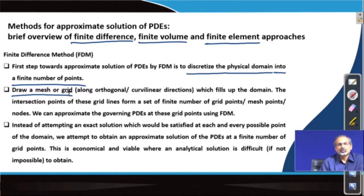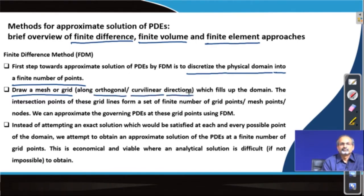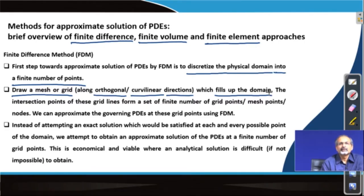These mesh or grid lines may or may not be orthogonal. When they are not necessarily orthogonal, we usually refer to them as curvilinear mesh or curvilinear grid. It is essential that the grid or the mesh covers the entire domain of interest. This filling of the domain is at this point meant to be a spatial activity. So we have a certain region in space which we are trying to fill up, and we are using some kind of mesh points to discretize it.